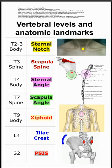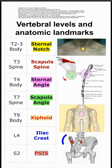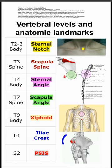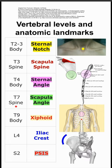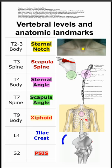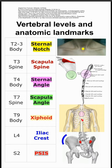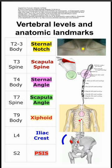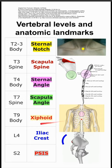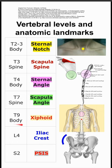Next is the scapula angle. The scapula angle is the bottom of the scapula that you would see on someone's back here. That corresponds to the spine of T7. Next is the xiphoid process. That's the red marking right here, kind of at the base of your breastbone. That corresponds to the body of T9.